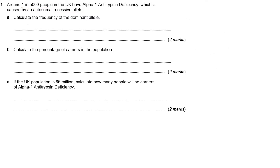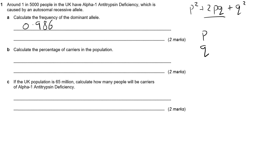So from the first part of the question, we had P equals 0.986. From there, we then have to calculate the percentage of carriers. Carriers, via the Hardy-Weinberg equation, are represented by 2PQ in the expression P squared plus 2PQ plus Q squared. It's the 2PQ that represents our carriers or heterozygous condition. So we know the values for P and Q from the previous question.